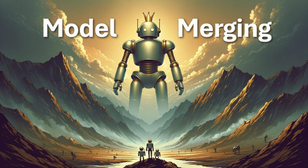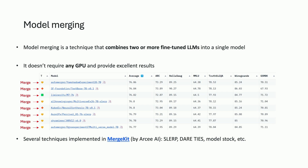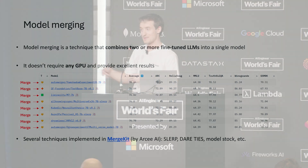Let's talk about model merging now. Model merging is the idea that you can take the weights of different fine-tuned models and combine them together, leveraging what the open source community has produced on the Hugging Face Hub. It doesn't require any GPU, so it's super efficient and provides excellent results. The OpenLM leaderboard shows that for 7B parameter models, the entire top 8 or top 10 is just merged models — it's extremely effective at producing high-quality models. I would recommend using MergeKit, the leading library in this space with a lot of different techniques implemented.